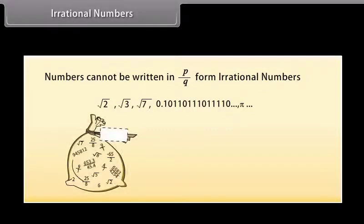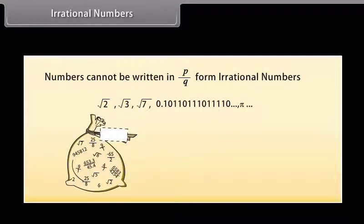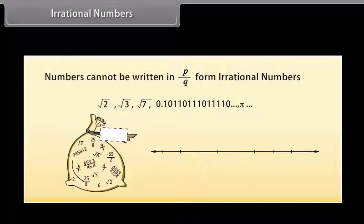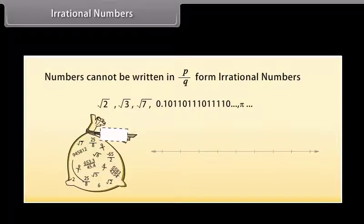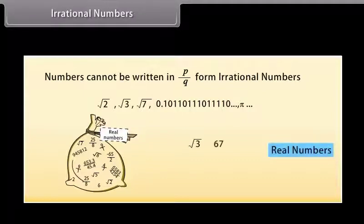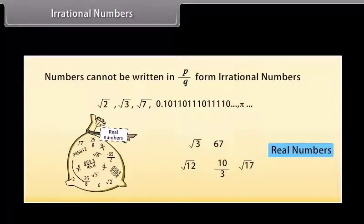If we collect all the rational numbers and irrational numbers and put them in a bag, there will be no number left on the number line. We call this collection real numbers. Therefore, a real number is either rational or irrational.